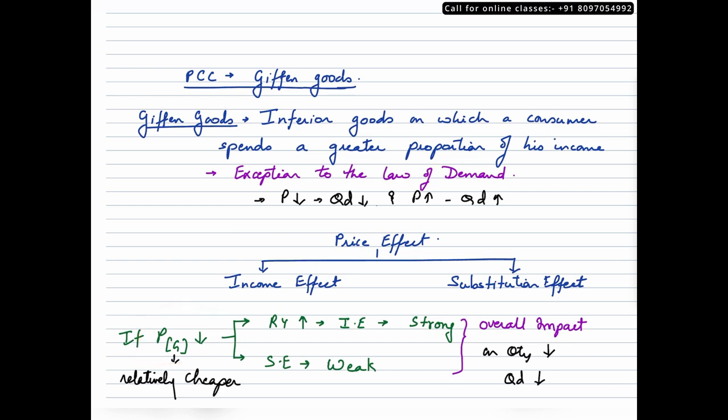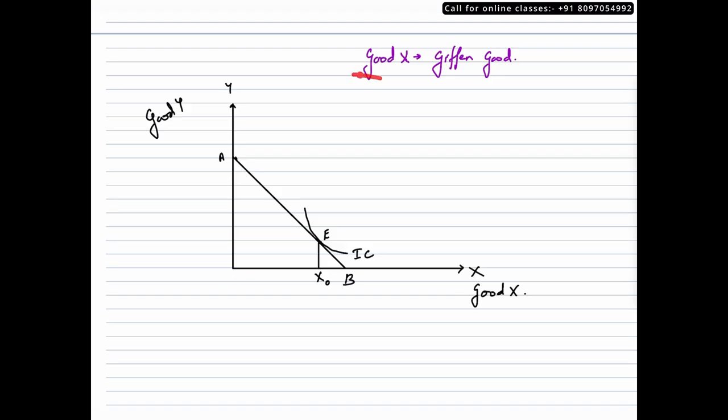Let's take a look at how it would look on a graph. Now in this graph, good x is a Giffen good. We have the budget line which is AB and the indifference curve IC is tangent to this budget line at point E. At point E, a consumer is purchasing x zero quantity of this Giffen good.